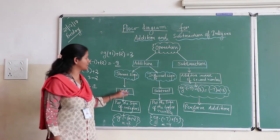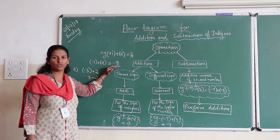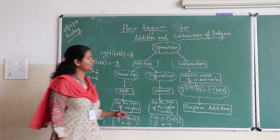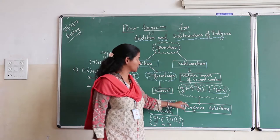So this flow diagram gives us the proper way by which we can perform addition of two integers. Now let us see how to do subtraction of two integers.